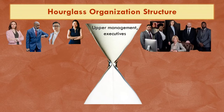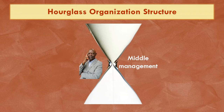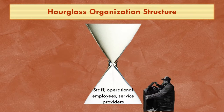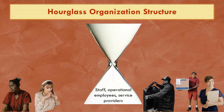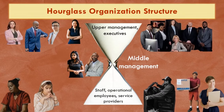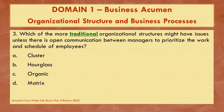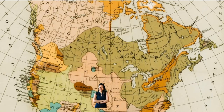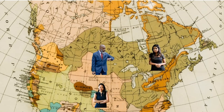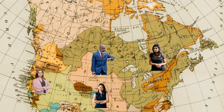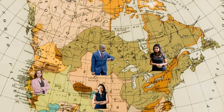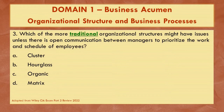The hourglass then expands back to many lower-level employees on the operational floor providing services or making products. An organic structure is a non-traditional structure that does not require much effort to move employees around different reporting lines. It involves decentralized — not centralized — decision making and has a wide span of control.